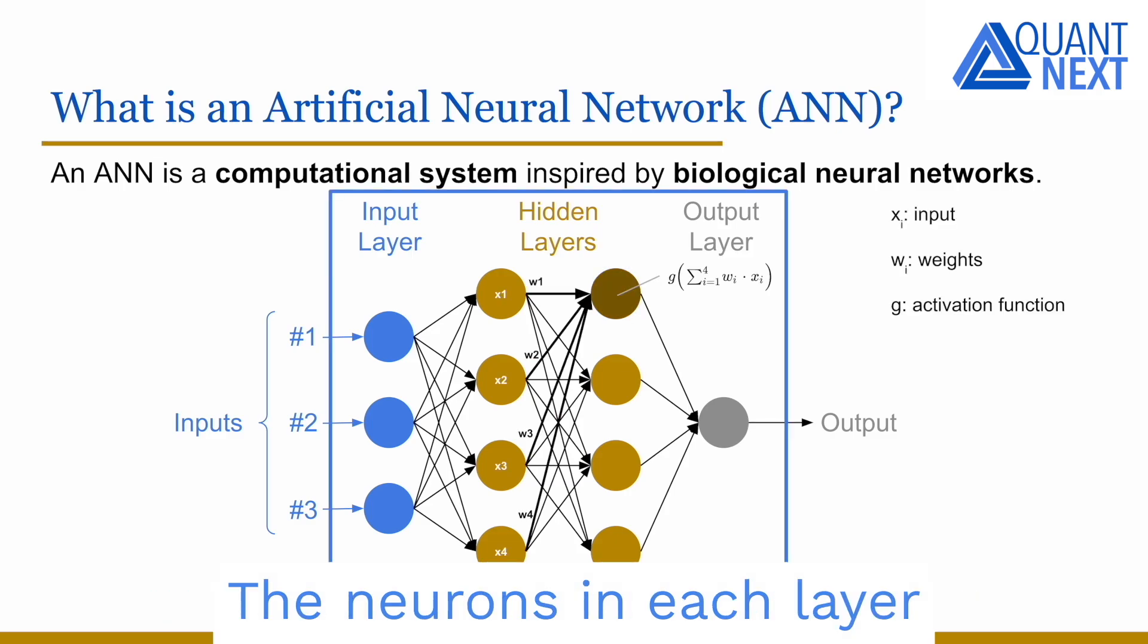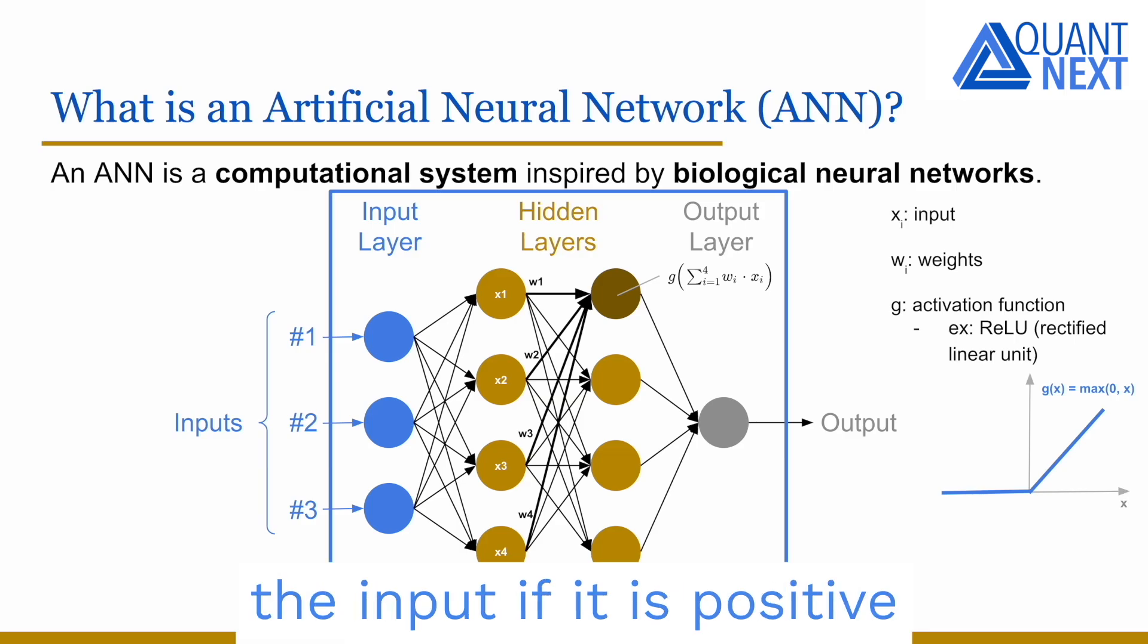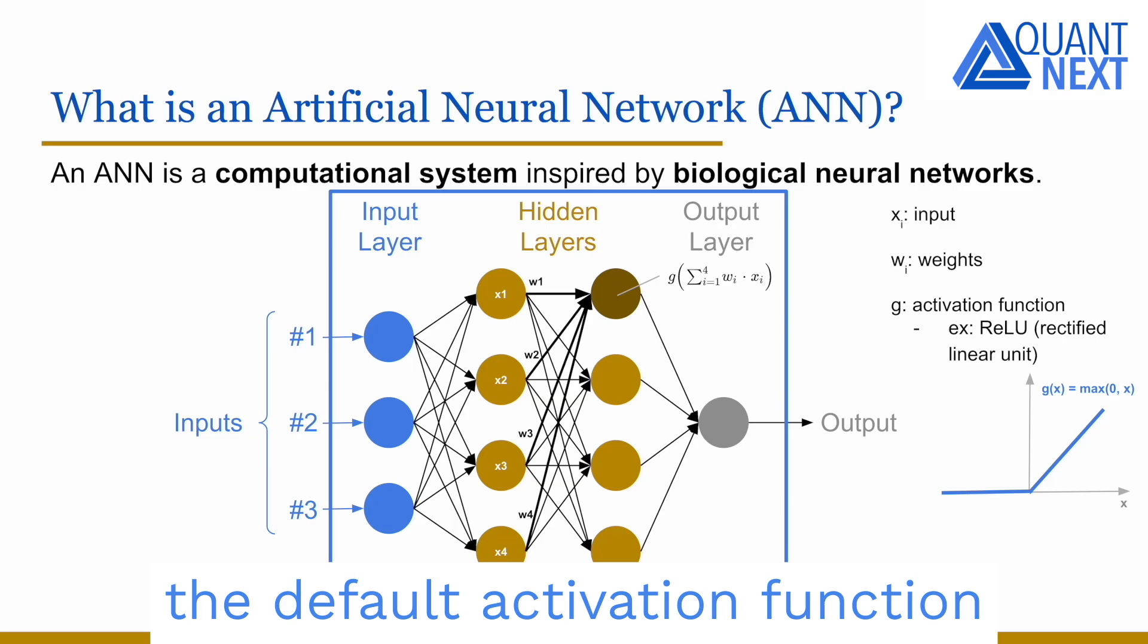The neurons in each layer receive weighted inputs, process them through an activation function and then pass the results to the neurons in the next layer. The rectified linear activation function, or ReLU, is a piecewise linear function that will output the input if it is positive and output zero otherwise. It is widely used as a default activation function in neural networks due to its ability to facilitate easier training and often yielding good performance.